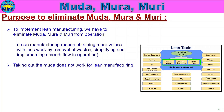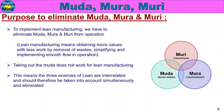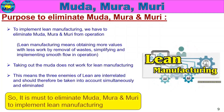Muda waste activity must be eliminated. Lean manufacturing is achieved when we account for all operations and eliminate all three — because the 3M are the main enemies. So it is a must to eliminate the 3M to implement lean manufacturing.